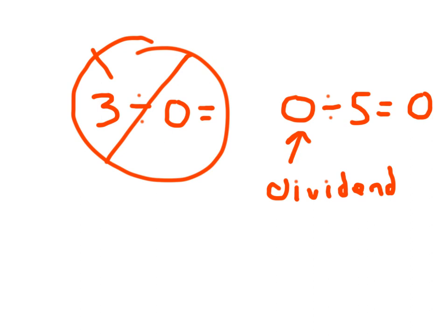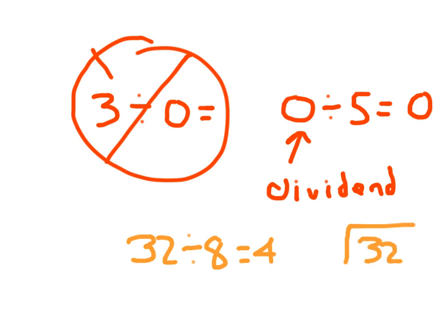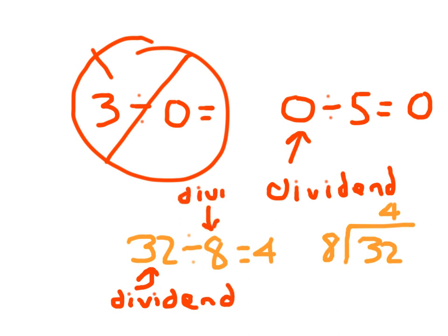Let me write down one last thing. If we have 32 divided by 8 equaling 4, what are those different parts called? 32 is the dividend. 4 is our quotient — the answer to a division problem. And 8 is our divisor — it's what we are dividing by. The answer to our division problem is the quotient.